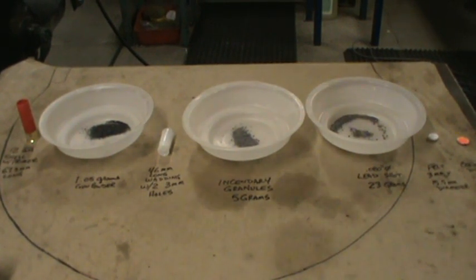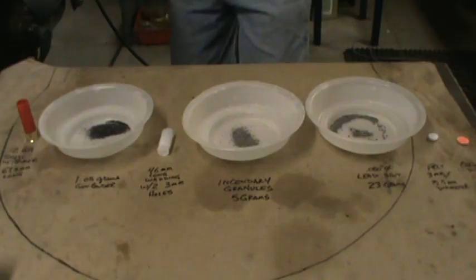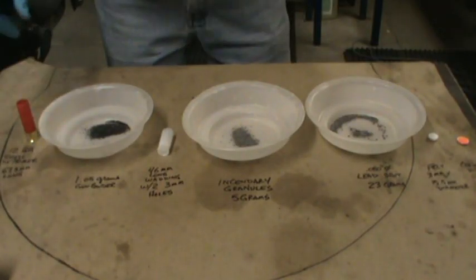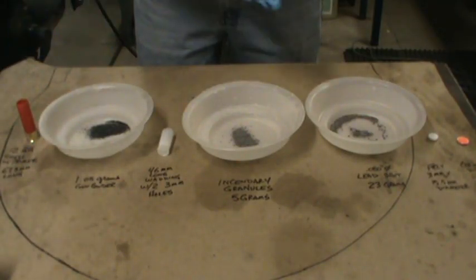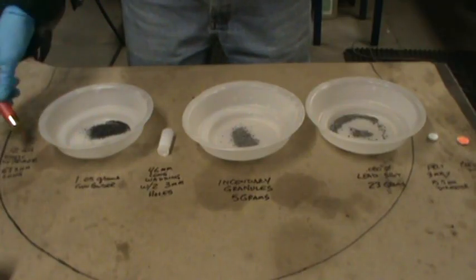This is a Dragon's Breath shotgun shell. It's a 12-gauge shotgun shell that's been disassembled. It's a pretty conventional load. Regular shotgun shell, regular primer.